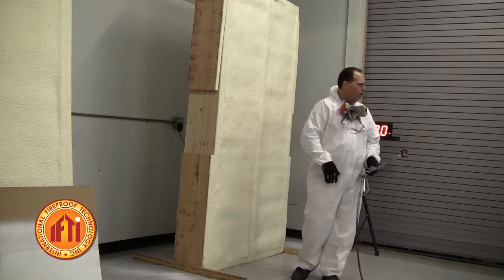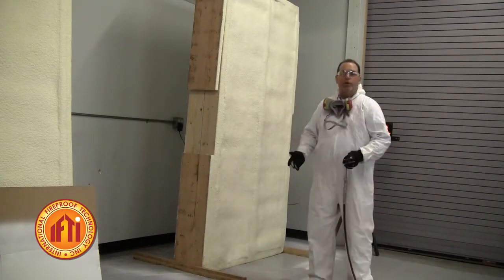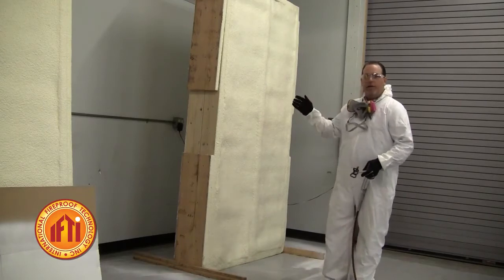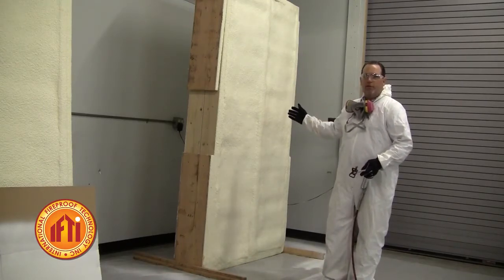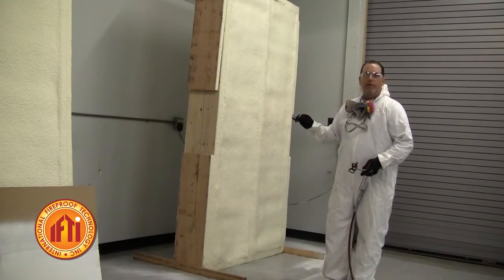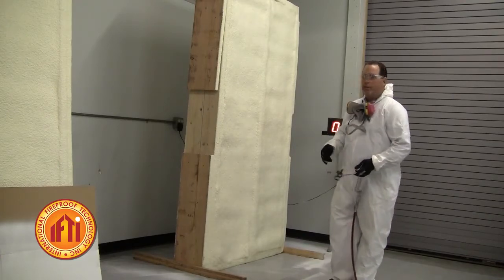So what we're going to install here is a couple of metal plates that we're going to use as our tags. As we're coating this foam, we'll put the same mills across the tags. We'll be able to do a wet mill thickness to see where we are in our application.